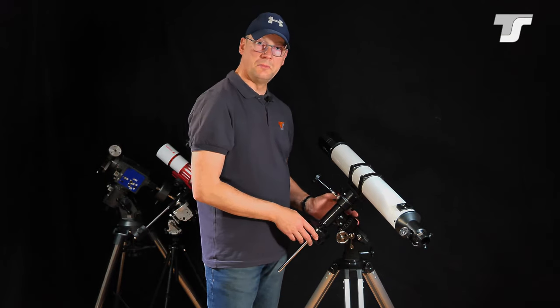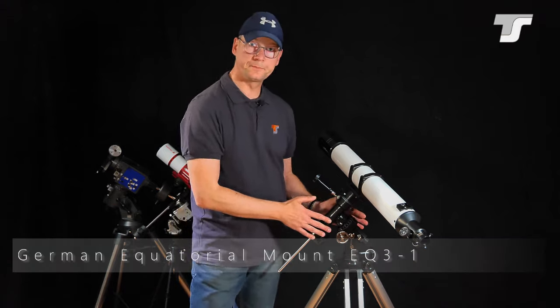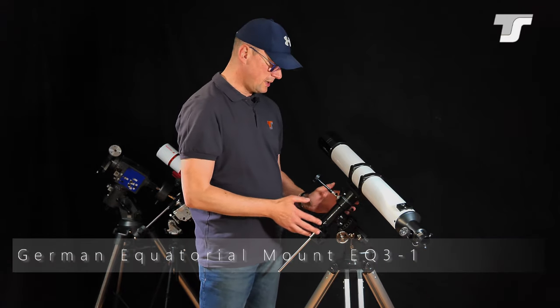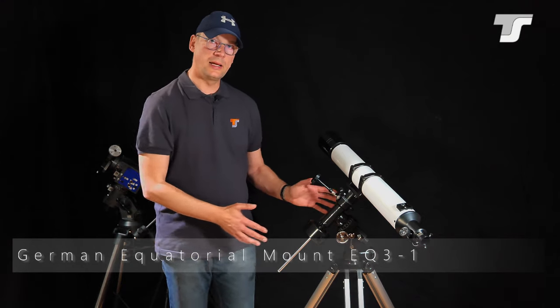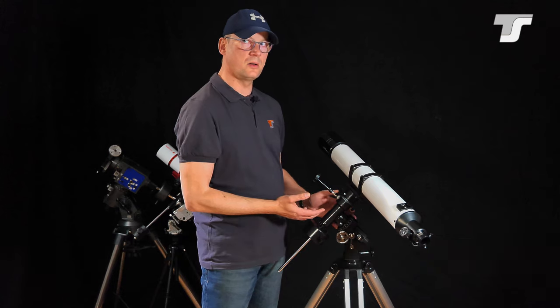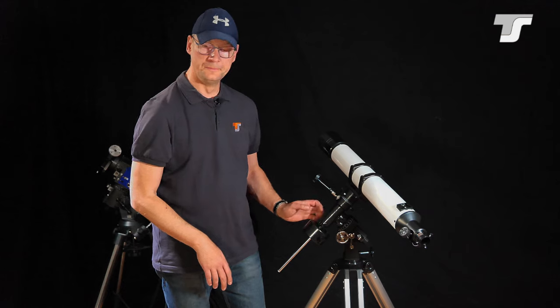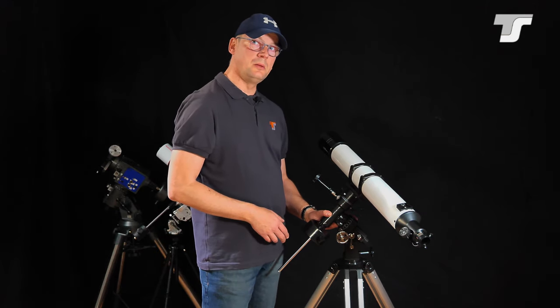Then the next and maybe most interesting thing also on such a telescope is the mount. First of all, you may ask why does a telescope mount look so weird? It's not like a photo ball head or gear head of a photo tripod, but it's more technical. So this is called an equatorial mount.